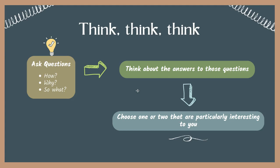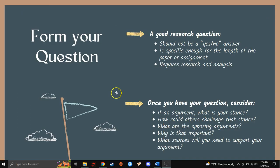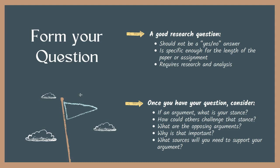Choose one or two answers that appeal to you and form a question. A good research question should not have a simple yes or no answer. Rather, it should be specific enough for the assignment, as well as require some research and analysis. If you're making an argument or trying to prove a point, how could your stance be challenged? What are the opposing viewpoints, if any? Why is what you're saying so important? What kind of sources will you need to support your argument or answer your research question? Remember, a research question should be clear, focused, and balanced in its complexity.